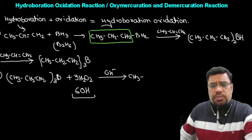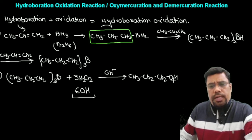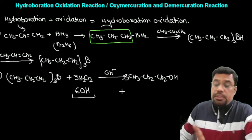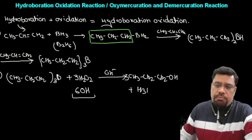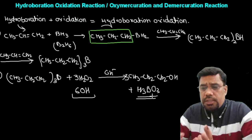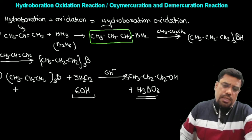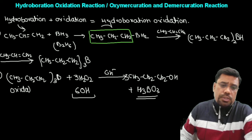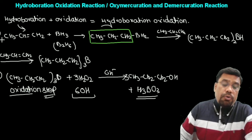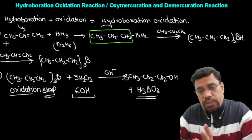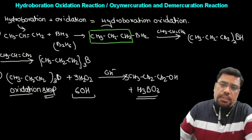3 OH groups trialkyl borane से जुड़ जाते हैं और बन जाता है CH3-CH2-CH2-OH यानि propan-1-ol। बाकी बचे 3 OH से B(OH)3 यानि H3BO3 मिल जाता है। इस तरीके से hydroboration oxidation reaction complete हुई। ऊपर वाली step hydroboration है और यह step oxidation — मिलाकर hydroboration oxidation reaction कहते हैं।